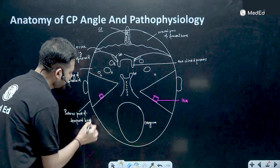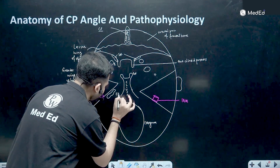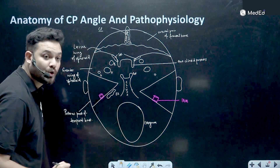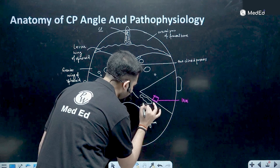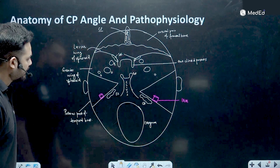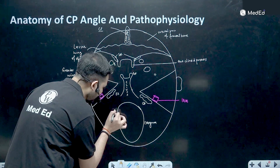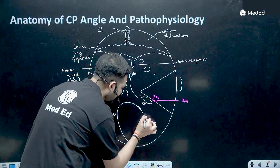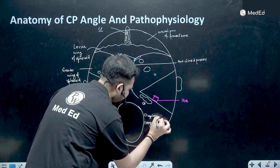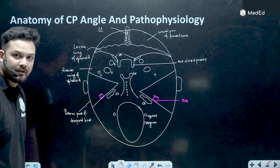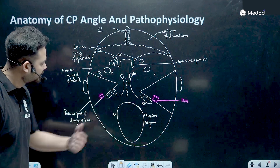There is another foramen present next to the internal acoustic meatus, like an oval jagged-edge structure — this is called the jugular foramen. And there is another foramen present on each side of the foramen magnum, called the hypoglossal canal — for the hypoglossal nerve to exit.